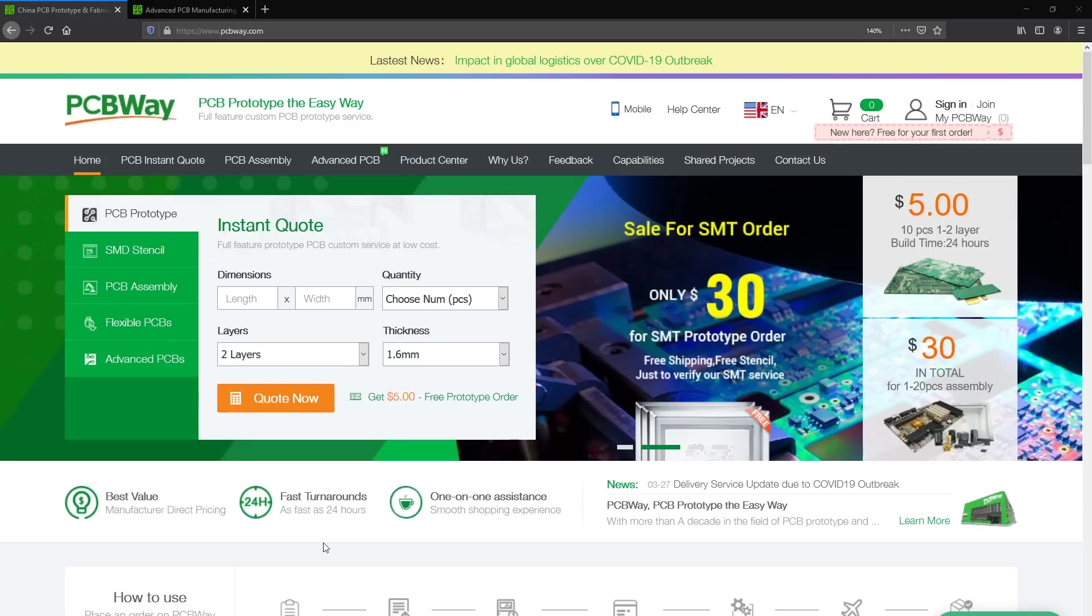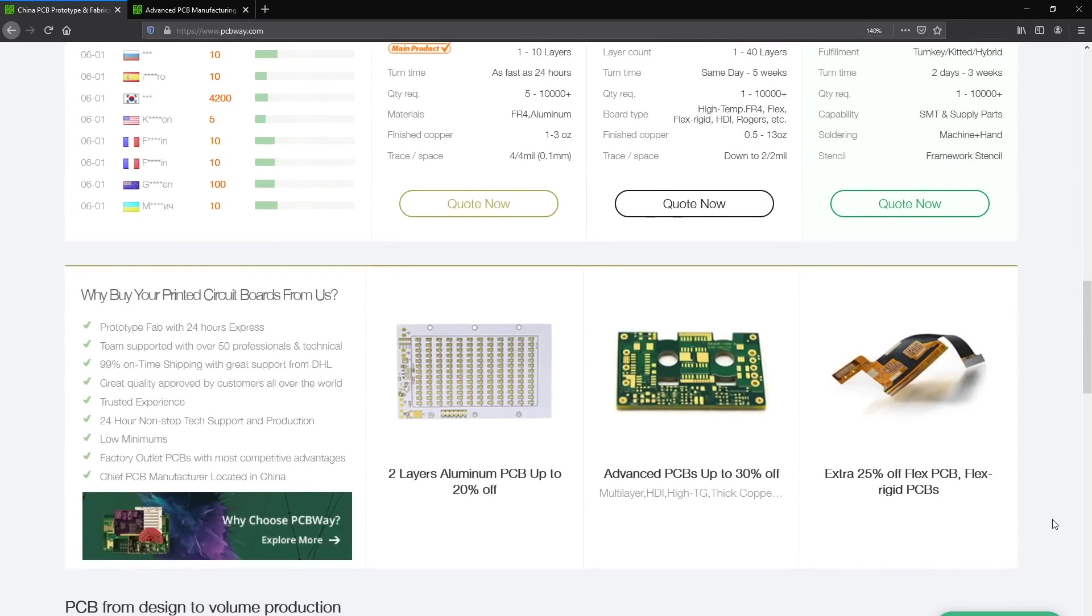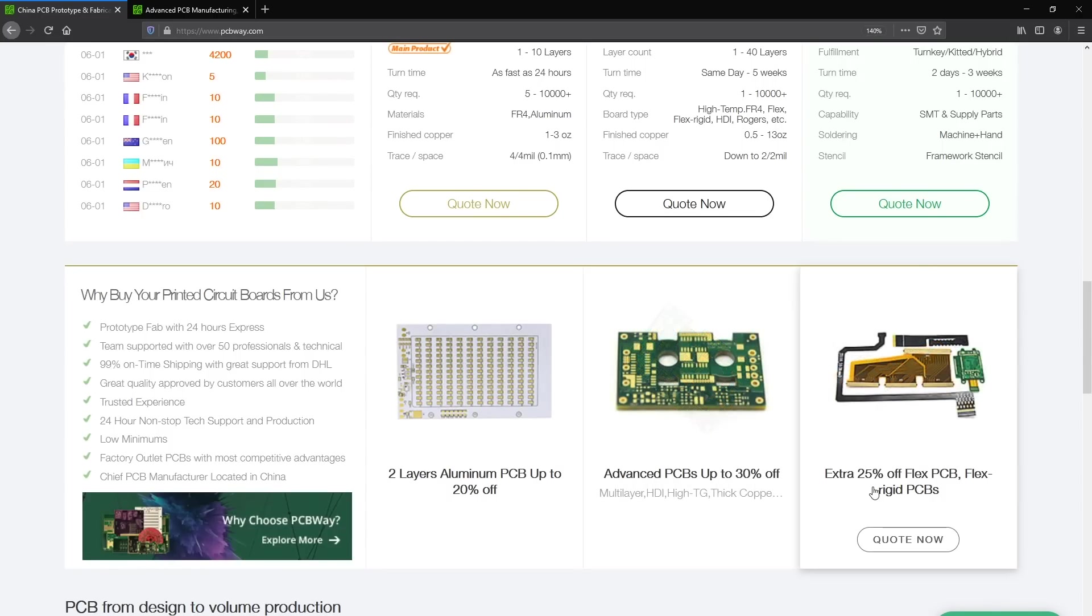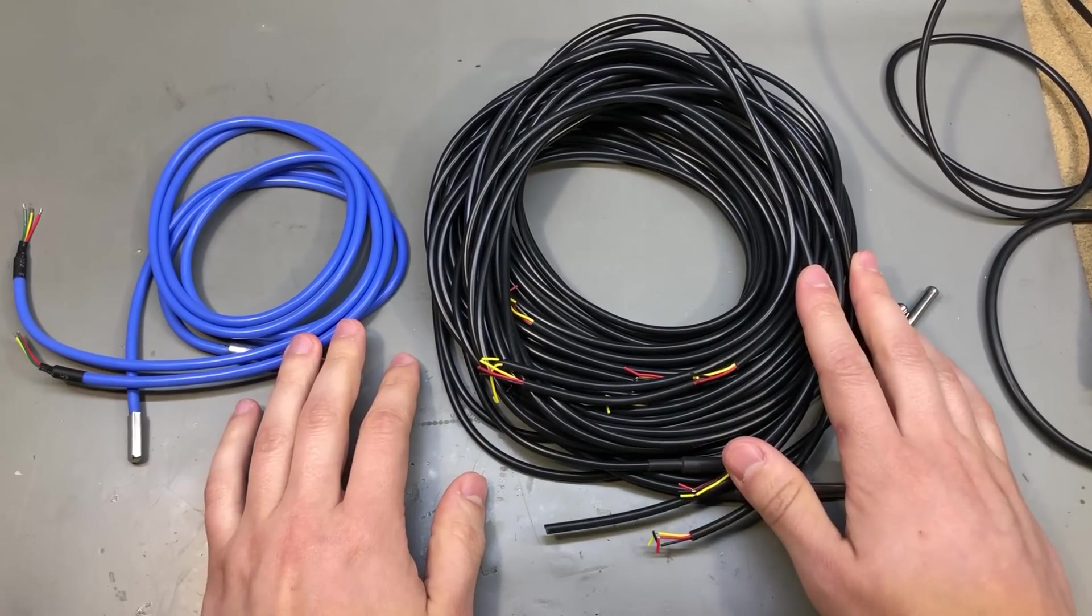Before we go on with the next items, let me mention the sponsor of this video. PCBway.com is the official provider of printed circuit boards for the Voltlog channel. They even have a prototyping service for 3D printing, CNC, laser cutting, injection molding so you could basically build a product entirely on their prototyping service. Check them out, the link is in the description below.